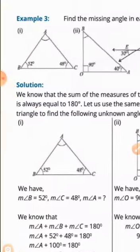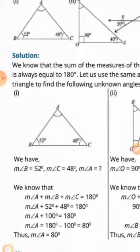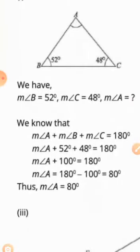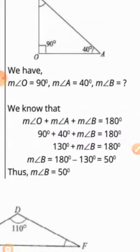اسی طرح Example 3 میں ہمیں کہہ رہا ہے find the missing angle in each triangle. جس triangle کے two angles given ہوں اور third find کرنا ہو، یاد رکھیں کہ کسی بھی triangle کے تینوں internal angles کا sum 180 degree ہوتا ہے۔ تو یہاں پہلے میں angle B = 52 اور C = 48 ہے، A find کرنا ہے۔ 52 اور 48 کو add کریں تو 100 آئے گا، 180 میں سے minus کریں تو angle A = 80 degrees۔